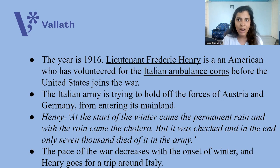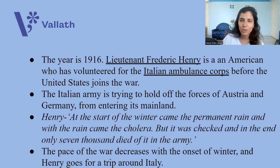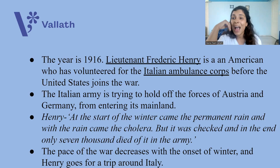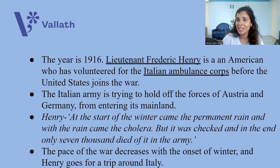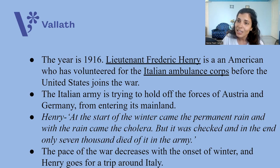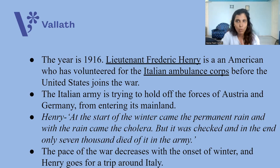Listen to Henry's line from the novel: 'At the start of the winter came the permanent rain, and with the rain came the cholera. But it was checked, and in the end, only 7,000 died of it in the army.' Can you imagine the harshness and the numbness of the war? After cholera and the rain and the winter, when 7,000 people died in the Italian army, Henry says 'only 7,000 people died.' That is what war does to you — every person dead just becomes another number. The pace of the war decreases because of the winter, so the war's pace is decreasing.